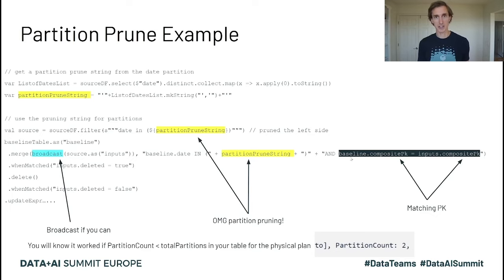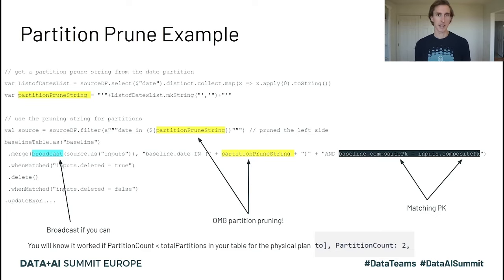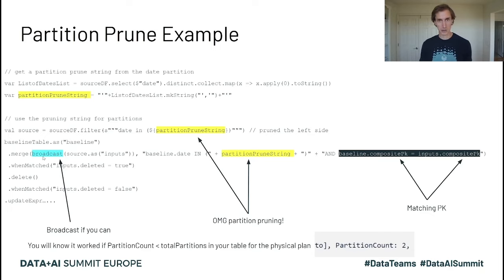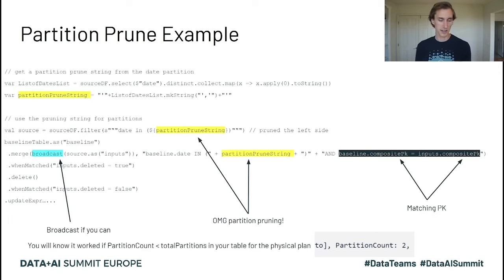The matching primary key is the join condition — 'baseline.pk equals input.pk'. The other thing to point out here is broadcasting: remember, the inner join and the anti-join can both be broadcasted within the second phase. There's a Spark configuration to change the broadcast threshold — by default that's about 10 megabytes, but you can definitely increase that much higher.